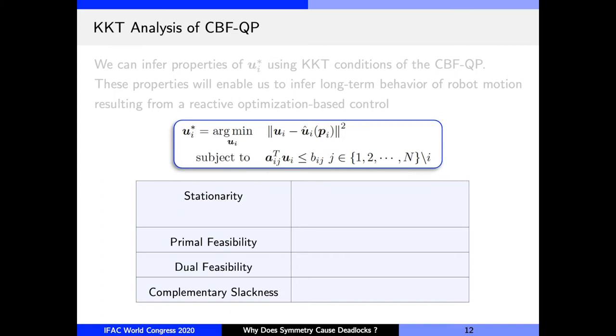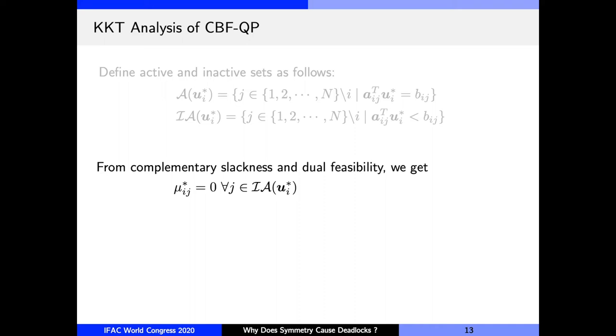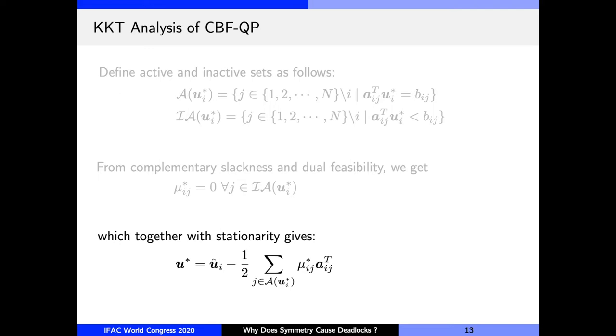So what are these conditions? Well, there are four. There is stationarity, which comes from setting the gradient of Lagrangian equal to zero. There is primal feasibility, which is simply the feasibility of the constraints of the QP. Then there is dual feasibility and complementary slackness. Here μ_ij are the Lagrange multipliers for the inequality constraints. So given these conditions, we can define the set of active and inactive constraints as follows. The set of active constraints is the set of all those indices, or robots in our case, for which the constraint is active, that is, equality holds. Likewise, the set of inactive constraints is those indices for which strict inequality holds. From complementary slackness, we know that Lagrange multipliers will be zero for all inactive constraints, and that, together with stationarity, gives us the following expression for control as we wanted. Note here that the summation over j is restricted to the set of active constraints instead of all other robots in the system.